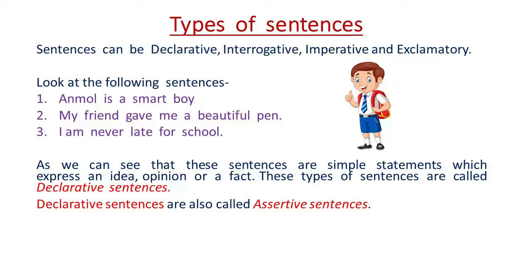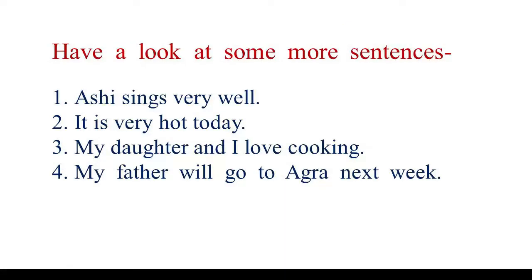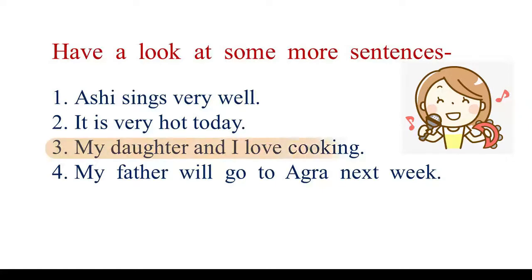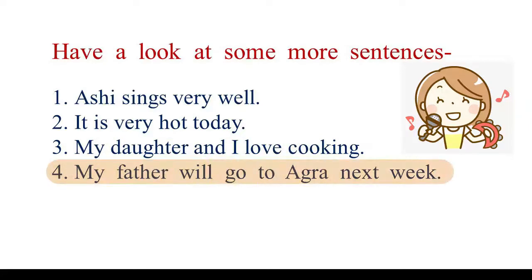These types of sentences are called declarative sentences. Declarative sentences are also called assertive sentences. Let us have a look at some more examples. Please repeat them after me: Ashi sings very well. It is very hot today. My daughter and I love cooking. My father will go to Agra next week. You must have noticed that all these sentences state, assert, or declare something, and that is why they are called declarative sentences.